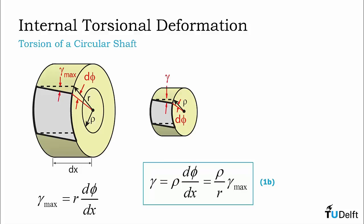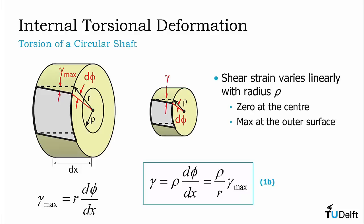From this simplified expression, it becomes apparent that shear strain varies linearly with radius rho, starting from 0 at the center of the shaft and increasing to a maximum at the outermost surface of the shaft.